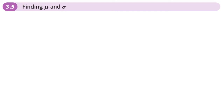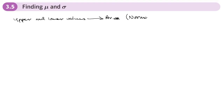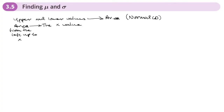This is the fifth lesson on the normal distribution and today we'll be looking at how to find the mean and the standard deviation or the variance. You would have noticed on your calculator you've got a way of finding the area if you know the value of x, if you know the upper and lower values. You can use that to find the area — that's where you use normal CD. If you know the area, you can use that to find the x value. This is the area from the left up to x, and that's when you use inverse normal.